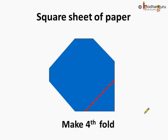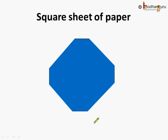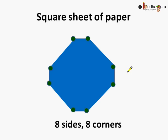Now let's make another fold. This is the fourth fold and we are doing it here at the red dotted line. What do we get? We get this kind of paper. Now can we count the corners and the sides of this paper? Yes. Let's do it: one, two, three, four, five, six, seven, eight. Now there are eight corners. And how many sides? One, two, three, four, five, six, seven, eight. Eight sides are there. So this sheet of paper has eight sides and eight corners.